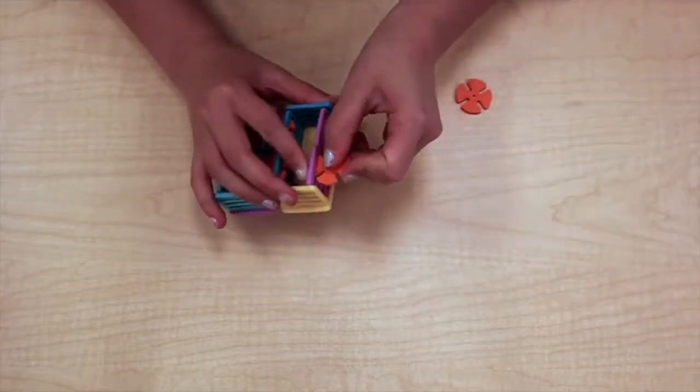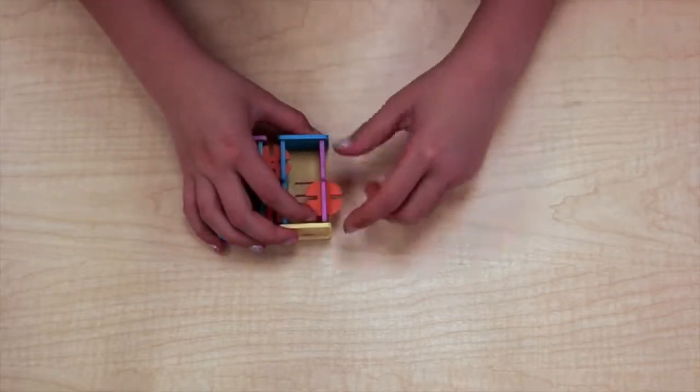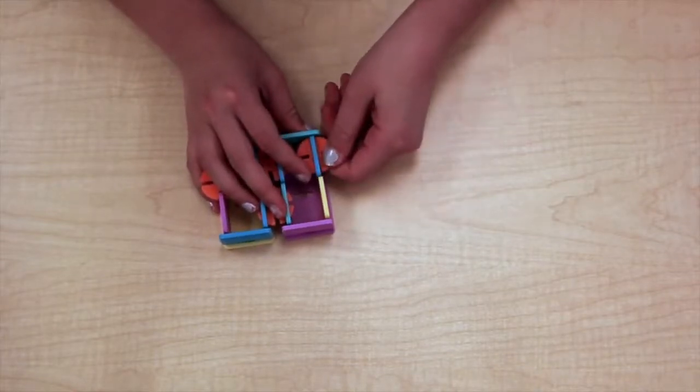Take a connector piece and slide it onto the side of the basket. Make sure to pull the connector piece towards the center of the basket like so. Do this to the other side of the basket as well.